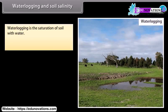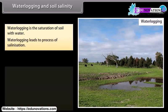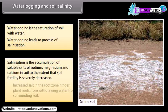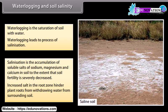Waterlogging is the saturation of soil with water. Waterlogging leads to the process of salinization. Salinization is the accumulation of soluble salts of sodium, magnesium, and calcium in soil to the extent that soil fertility is severely decreased. Increased salt in the root zone hinders plant roots from drawing water from surrounding soil.